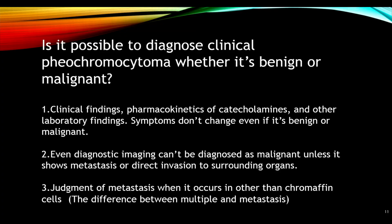It is possible to try to diagnose clinical pheochromocytoma as benign or malignant, but clinical findings, pharmacokinetics of catecholamines, and other laboratory findings and symptoms don't change whether it's benign or malignant. Even diagnostic imaging cannot diagnose malignancy unless it shows metastasis or distant invasion to surrounding organs. Judgment of malignancy relies on metastasis occurring in sites other than chromaffin cells.